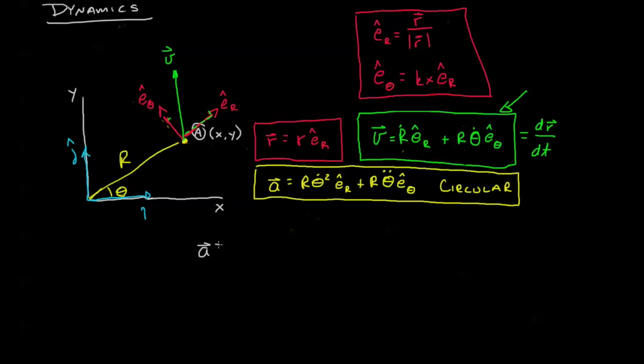If we do that we end up with quite a handful: r double dot minus r theta dot squared in the radial direction plus r theta double dot plus two r dot theta dot e theta.